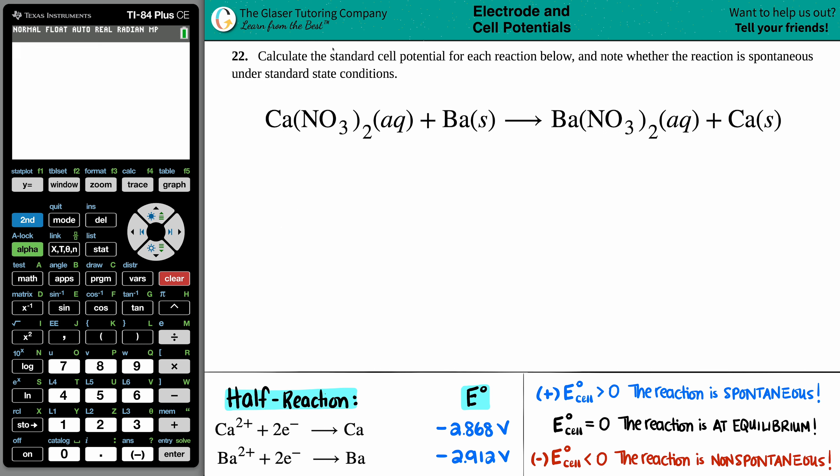Number 22. Calculate the standard cell potential for each reaction below and know whether the reaction is spontaneous under standard state conditions. Okie dokie. So we have our equation here. Calcium nitrate Ca(NO3)2 aqueous plus Ba barium solid yields barium nitrate Ba(NO3)2 aqueous plus calcium solid.